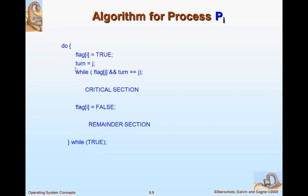Initially, we set flag[i] = true and turn = j. 'Turn = j' indicates that after i, j comes next. As long as the while loop condition is true — while flag[j] and turn == j — we allow process Pi into the critical section. Once it completes, we set flag[i] = false, meaning it is not ready because it has completed. Any remaining tasks go to the remainder section.